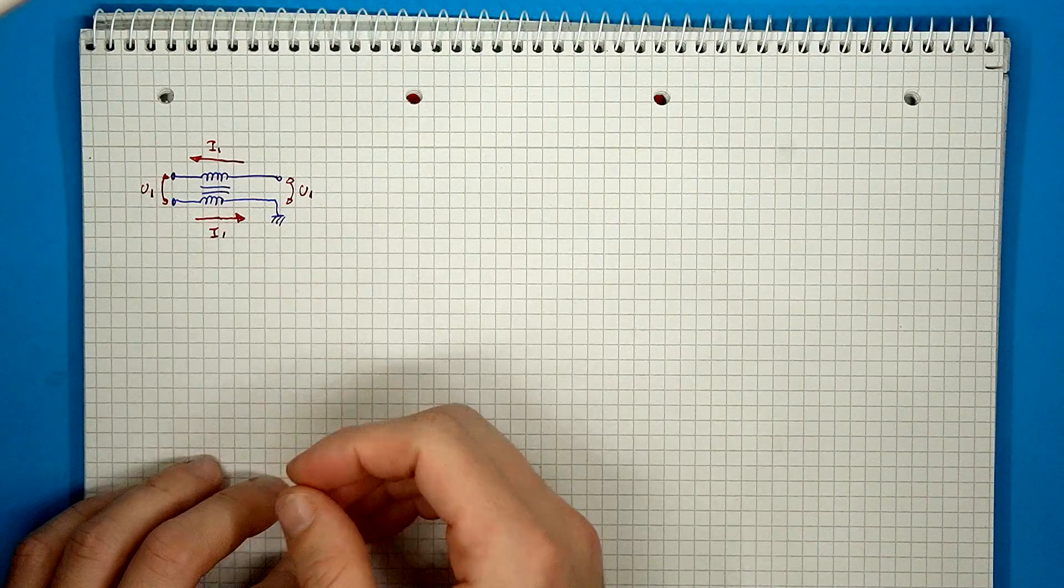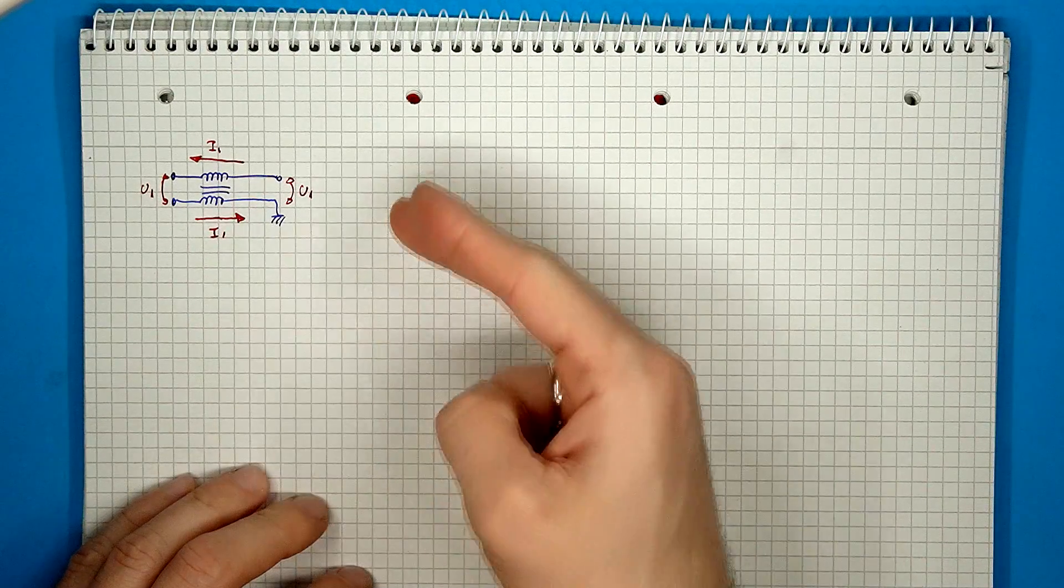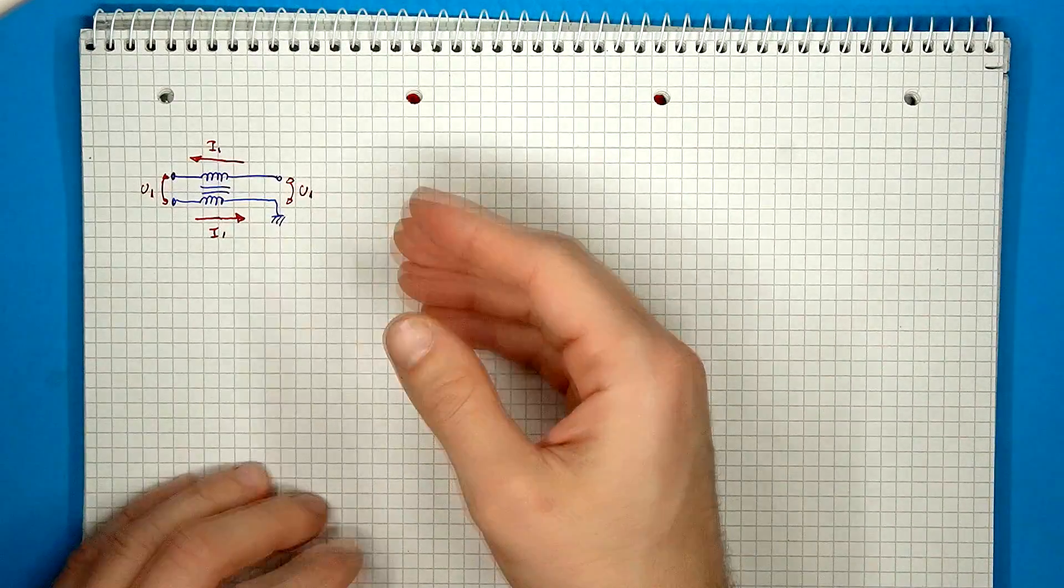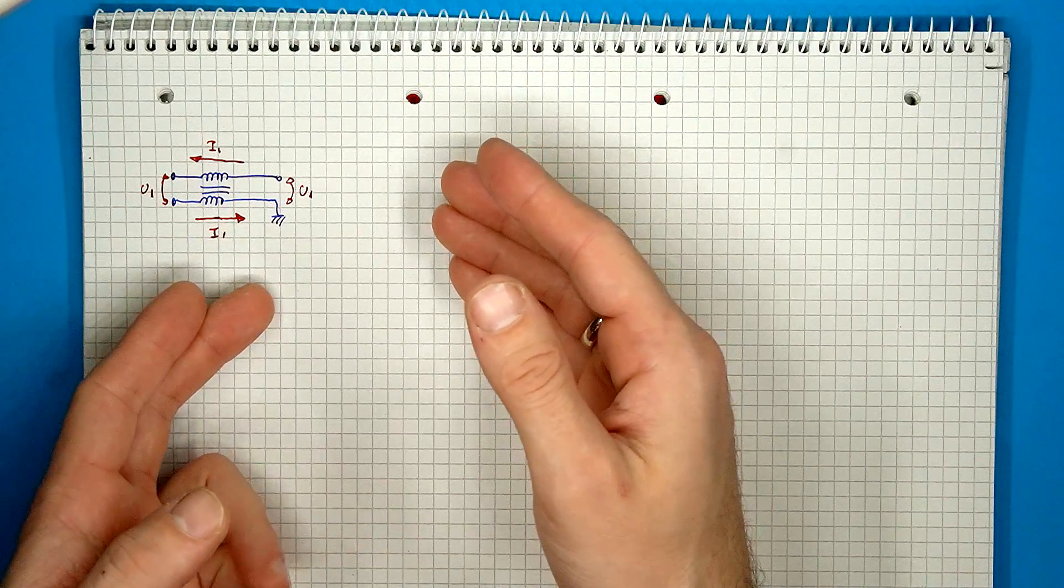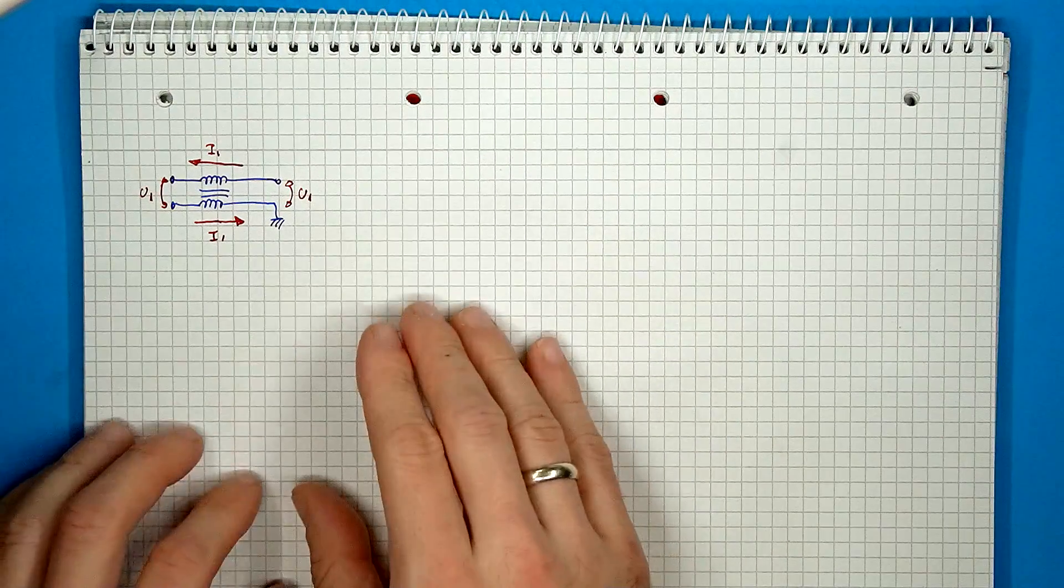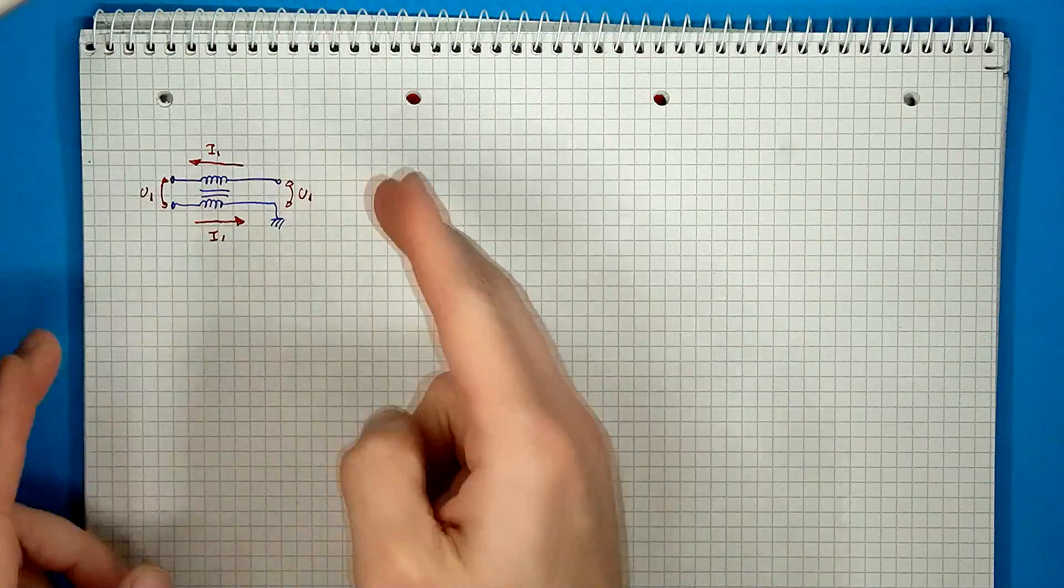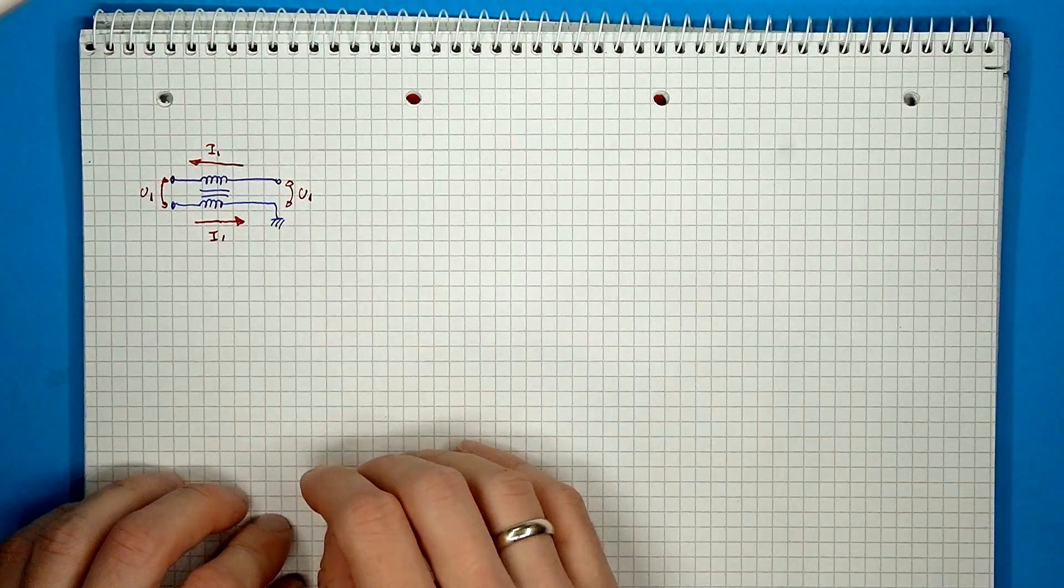If we start with the basic current balun, the main principle behind this thing is that if current is pushed through one line, it will also force an equal and opposing current on the other line through magnetic coupling. So in this way, regardless of what is connected on the balanced side, the two branches of the transformer will still see equal currents.